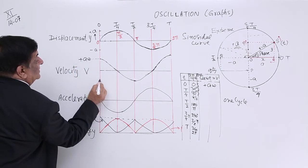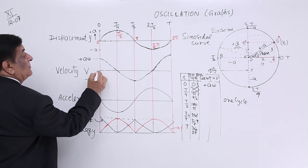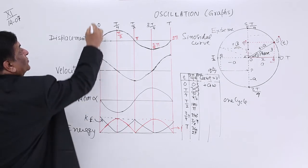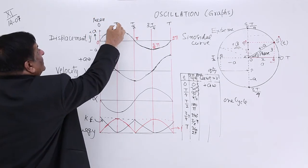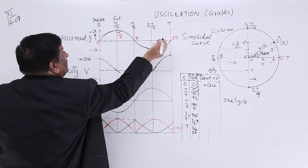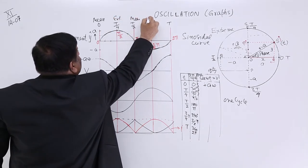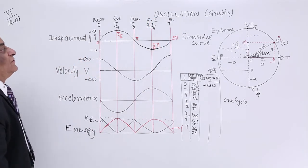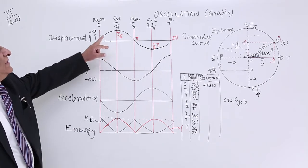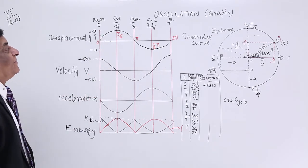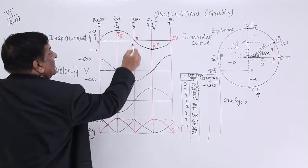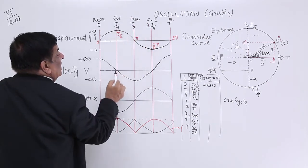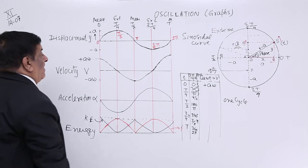When time equals 0, velocity is maximum, that is at mean position. This is extreme right. Again, this is mean. This is extreme left. And again, this is mean. So this is how oscillation takes place, and this is the graph of velocity. At mean position, velocity is maximum, and at extreme, velocity is 0.